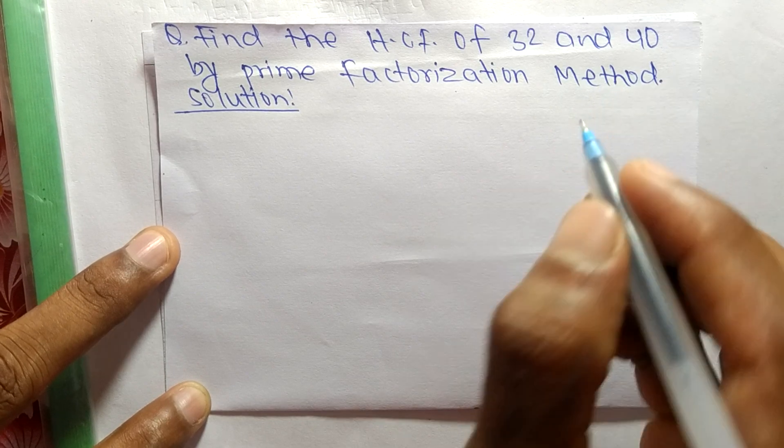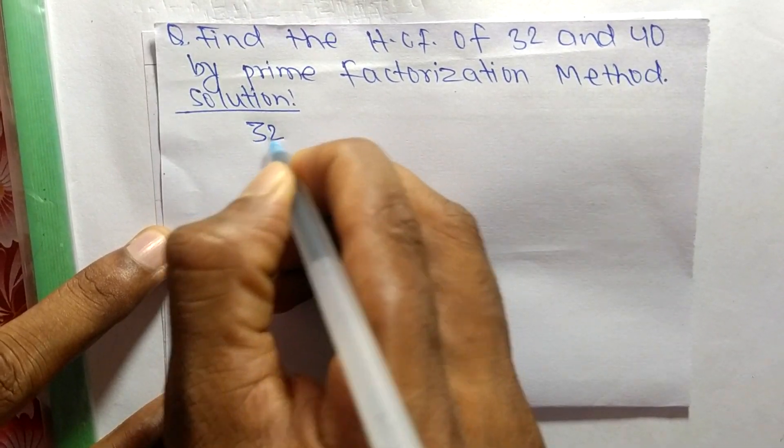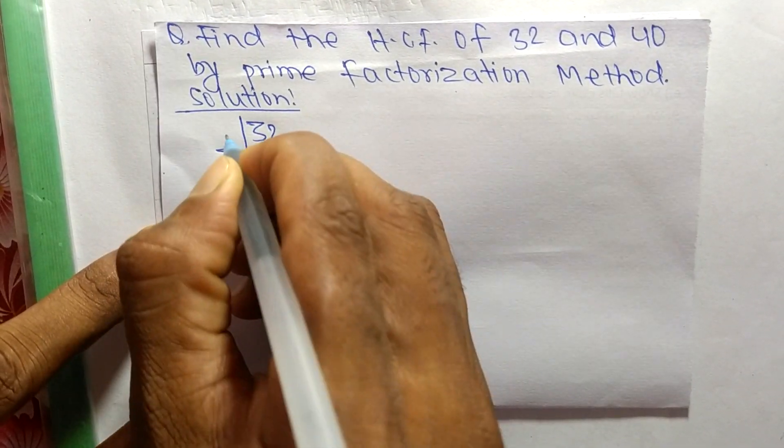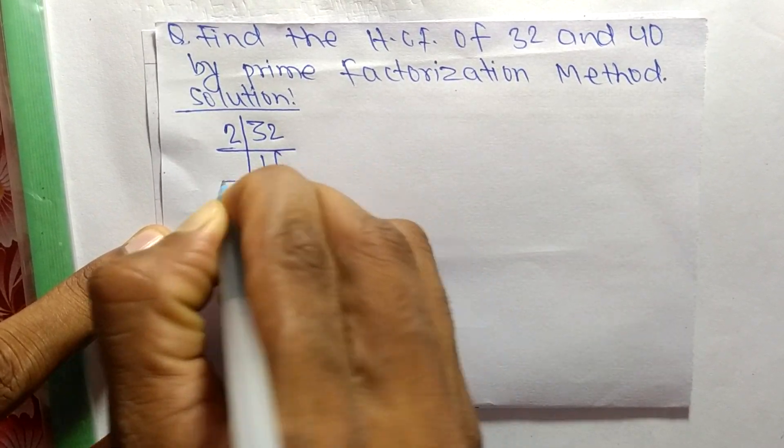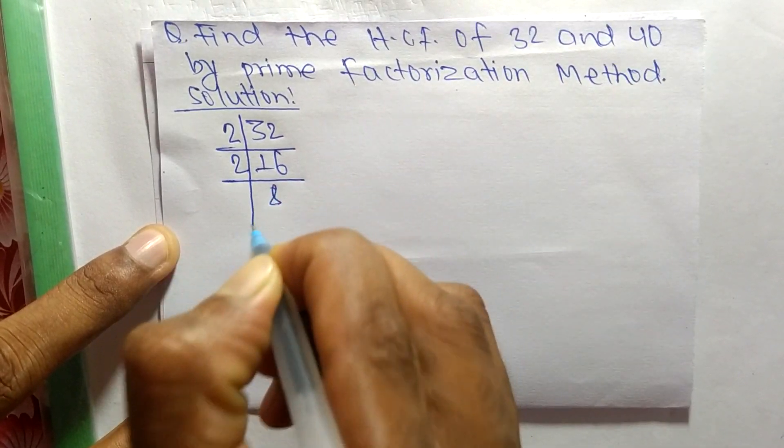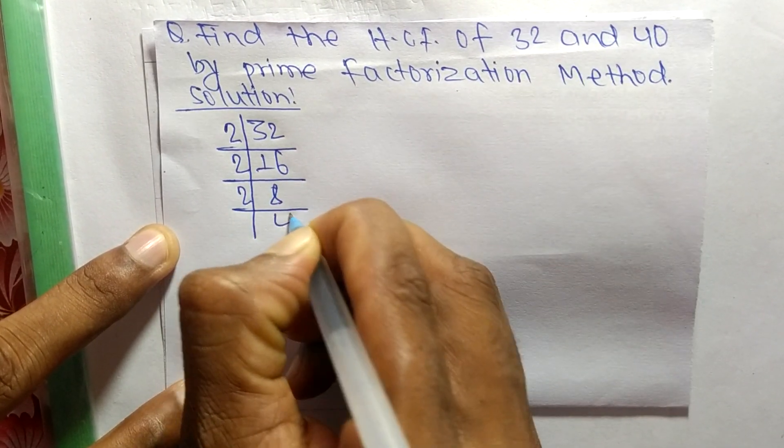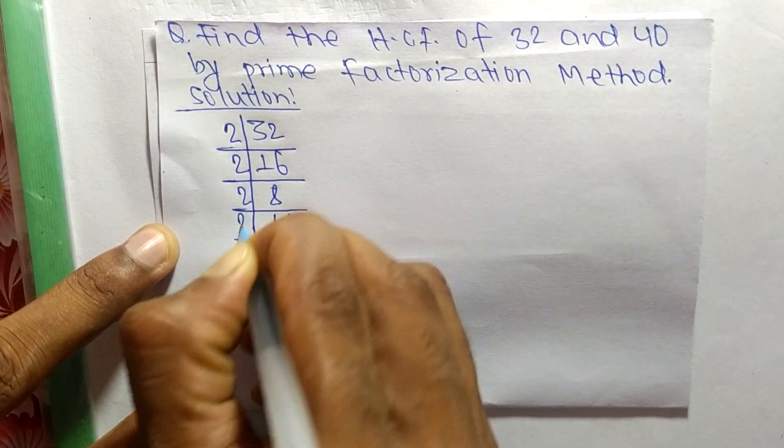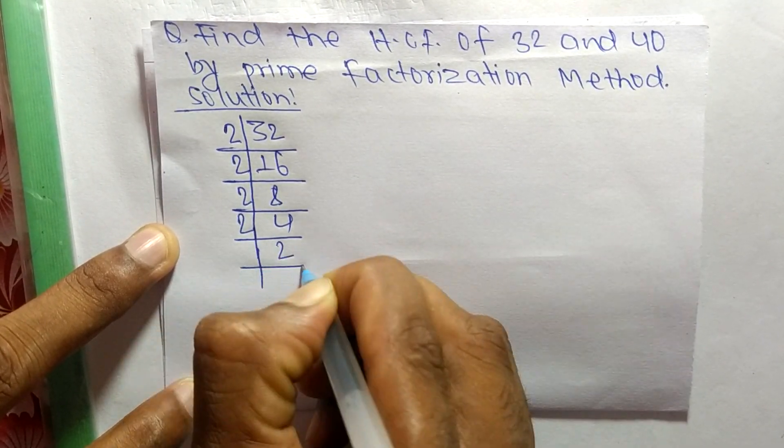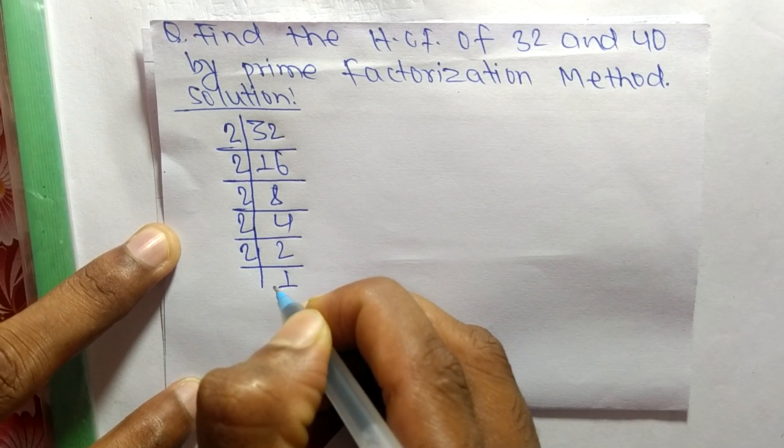First, we find the prime factors of 32. It is 2 times 16 equals 32, 2 times 8 equals 16, 2 times 4 equals 8, 2 times 2 equals 4, and 2 times 1 equals 2.